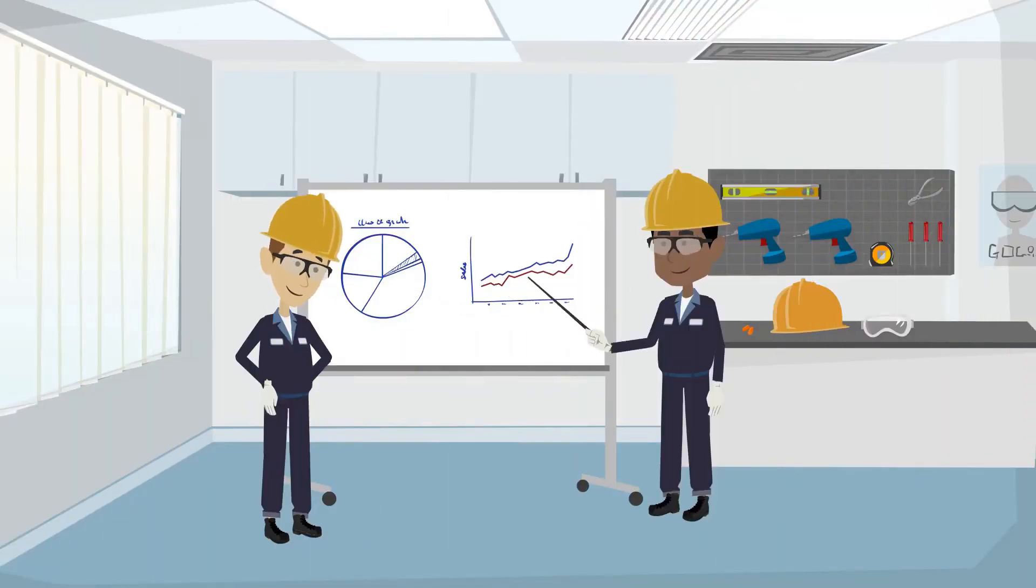The key to transformer reliability is adopting a condition-based monitoring strategy that collects and trends inspection data over time. This allows the maintenance team to assess and monitor the health of the transformers.